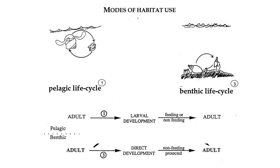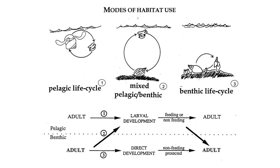On the right is an organism with direct development — the adult deposits eggs that grow directly into a juvenile that continues to grow into the adult form. The middle example is an organism with a mixed habitat use: the adult lives on the benthos and alternates with a life cycle stage that lives in the water column in the pelagos — what we call a mixed habitat use life cycle.